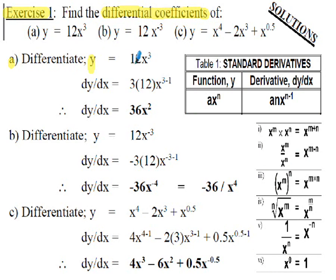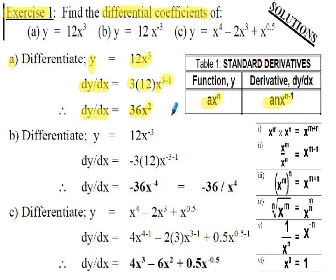Exercise 1a: find the differential coefficient of y = 12x³. This is of the form ax^n where a=12, x=x, and n=3. Following the pattern anx^(n−1): 3×12=36, and x^(3−1)=x², giving dy/dx = 36x². You do not need the intermediate step shown — you can go straight from y to the final dy/dx solution, but the intermediate step helps clarify how a is multiplied by n.